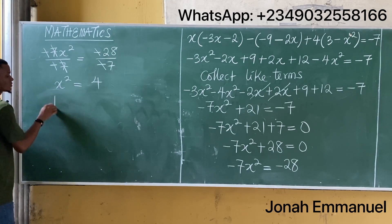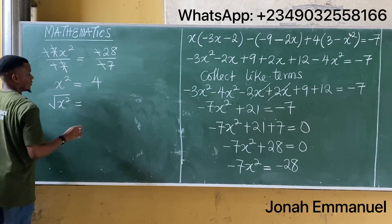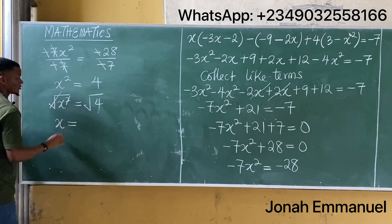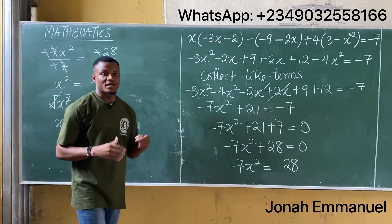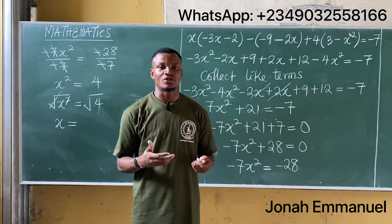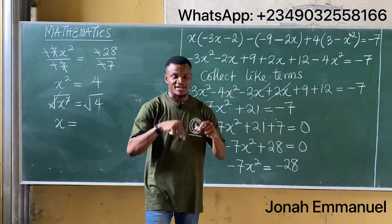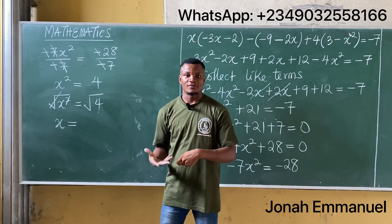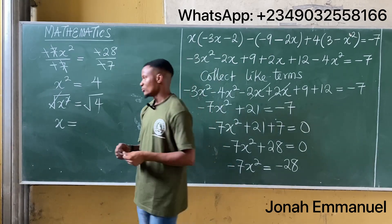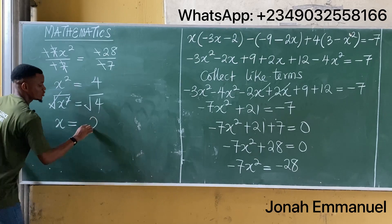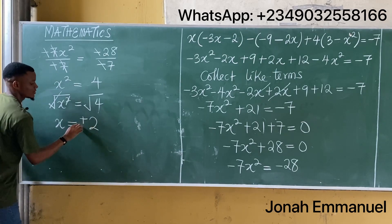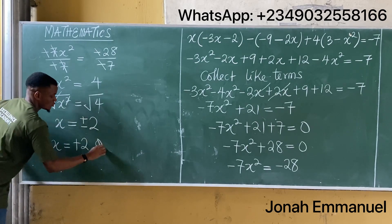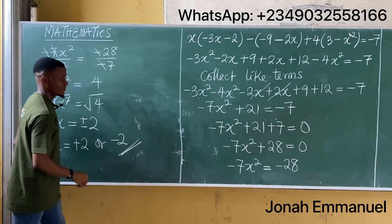Now take the square root of both sides: square root of x squared equals square root of 4. As we said in a previous class on quadratic equations, whose link is in the description, the square root of any term gives both the positive and the negative of that value. So the square root of 4 is not just 2 but plus or minus 2. Hence x equals plus 2 or minus 2. This is the answer.